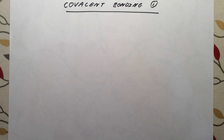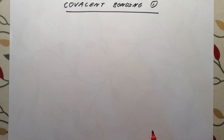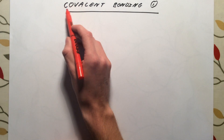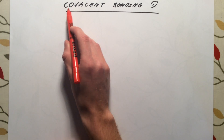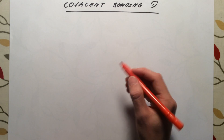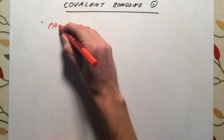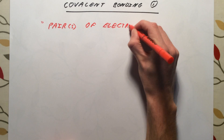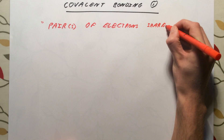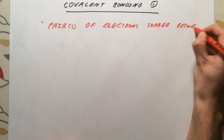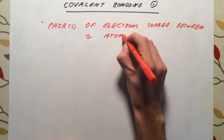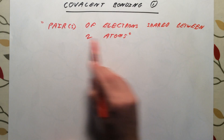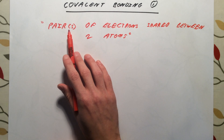We need to be able to explain what a covalent bond actually is. In ionic compounds, a metal atom transfers one or more electrons to a non-metal atom to form two oppositely charged ions. In covalent bonding, think about the start of this word — 'co.' If you cooperate with someone, you are sharing ideas or sharing something with them. Covalent bonding involves the sharing of pairs of electrons. So our definition of a covalent bond is one or more pairs of electrons shared between two atoms.